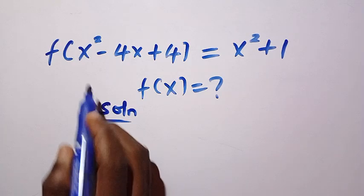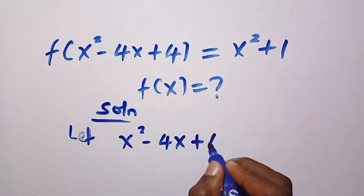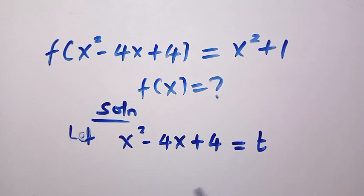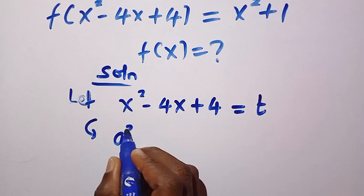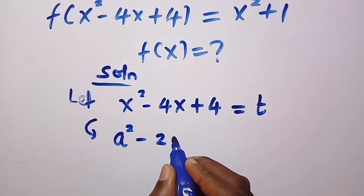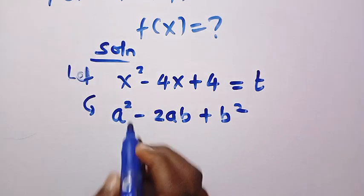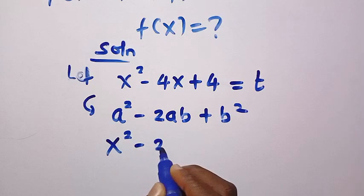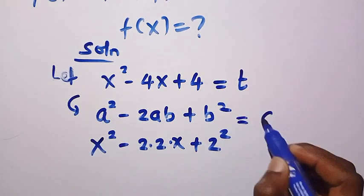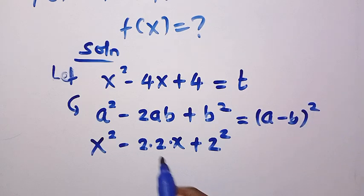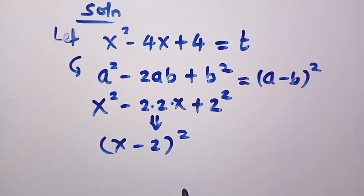Let's apply the substitution method. Suppose we let x squared minus 4x plus 4 equal t. Looking at the left-hand side, we recognize the pattern a squared minus 2ab plus b squared, which equals (a minus b) squared. Following that pattern here, x squared minus 4x plus 4 equals (x minus 2) squared.